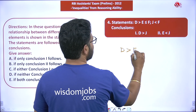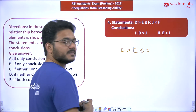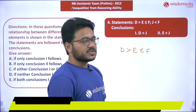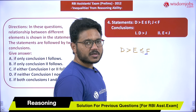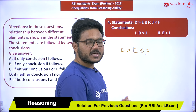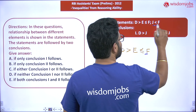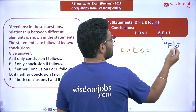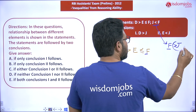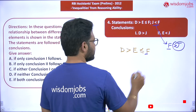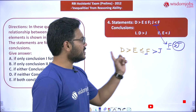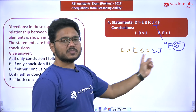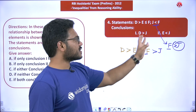Let me rewrite the statements. The first statement is: D > E ≤ F. The second statement is: J < F. The common element here is F, found at the end of both statements — and whenever you find a common element at the end, it is simpler to merge. J < F can be rewritten as F > J. Since F is common, we can merge both statements into the single statement: D > E ≤ F > J.